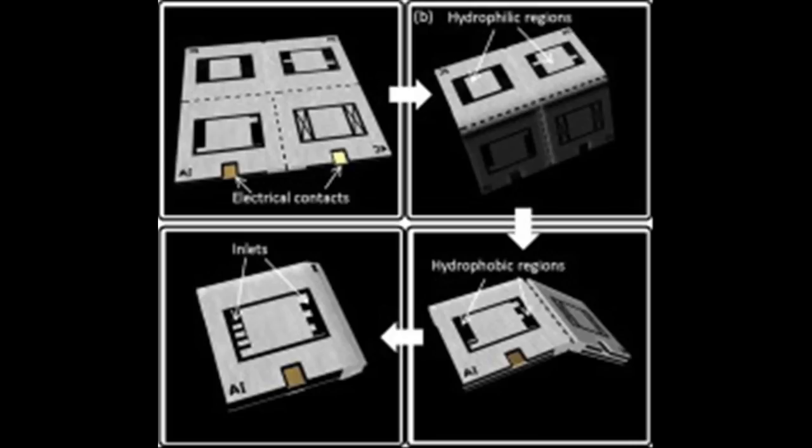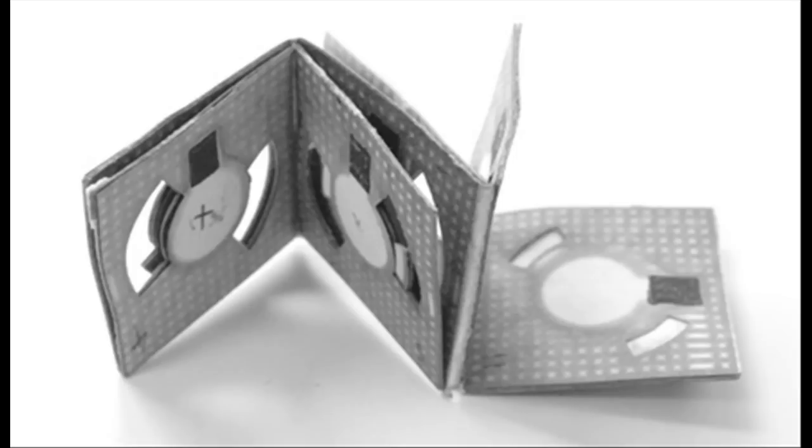It uses an inexpensive air-breathing cathode created with nickel sprayed onto one set of ordinary office paper. The anode is screen-printed with carbon paints, creating a hydrophilic zone with wax boundaries. Total cost of this potentially game-changing device is five cents only.